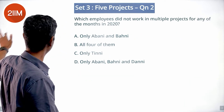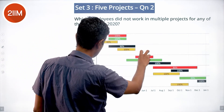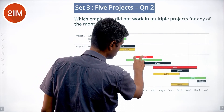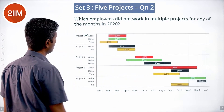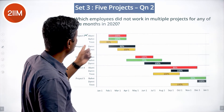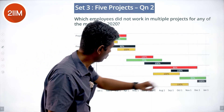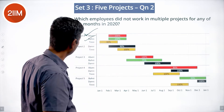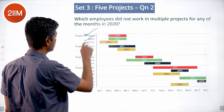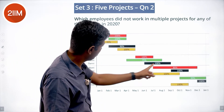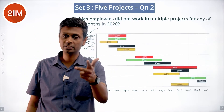Which employees did not work in multiple projects for any of the months in 2020? Abani worked in Feb-March, May-June, then July onwards — no overlap. Bhani — no overlap here, no overlap here. Tinni — there is an overlap here, so Tinni shouldn't be counted. Dhani — no overlap here, no overlap here. So Abani, Bhani, and Dhani — A, B, D.